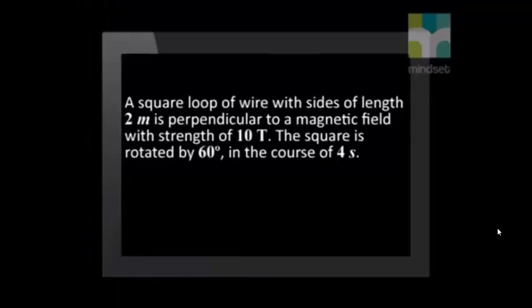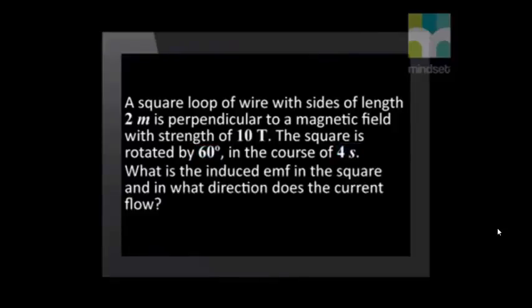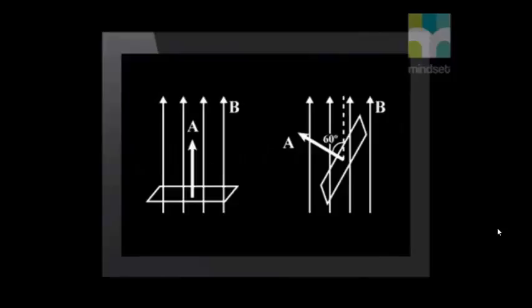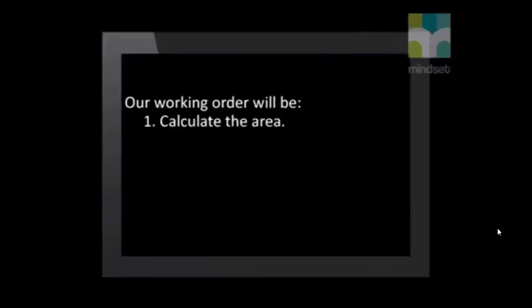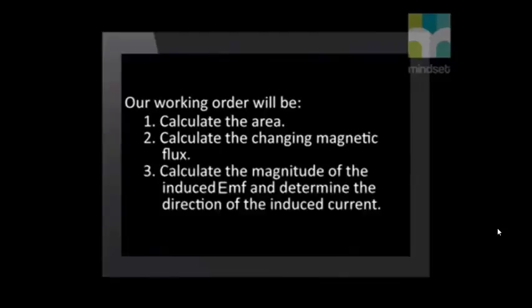There is time for one more example. We are going to answer two questions here. A square loop of wire with side length 2 meters is perpendicular to a magnetic field with strength of 10 tesla. The square is rotated by 60 degrees in the course of 4 seconds. What is the induced EMF in the square, and in what direction does the current flow? Our working order will be: 1. Calculate the area, 2. Calculate the changing magnetic flux, 3. Calculate the magnitude of the induced EMF and determine the direction of the induced current.